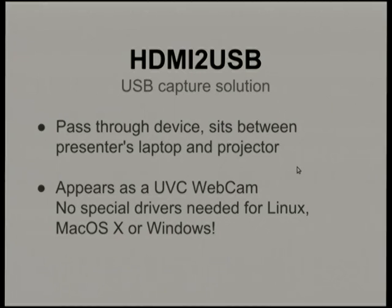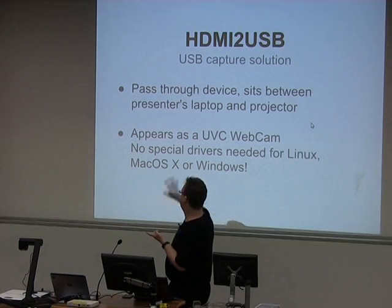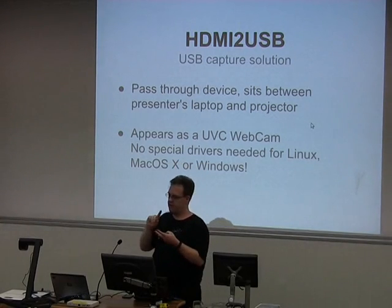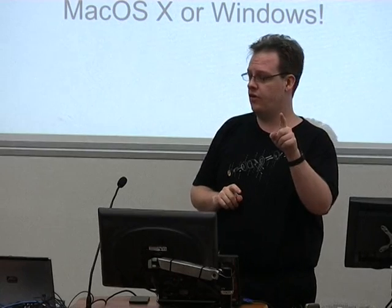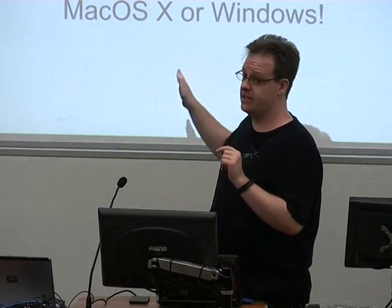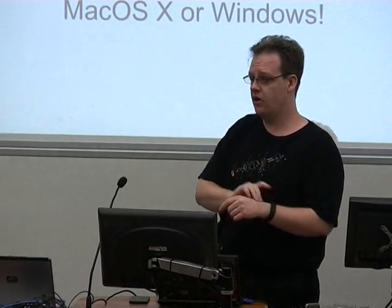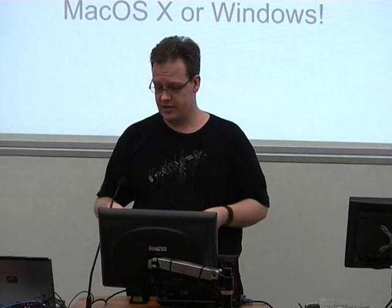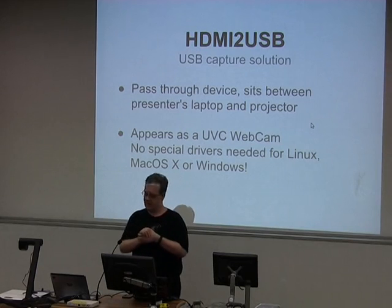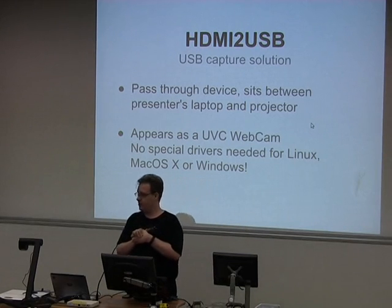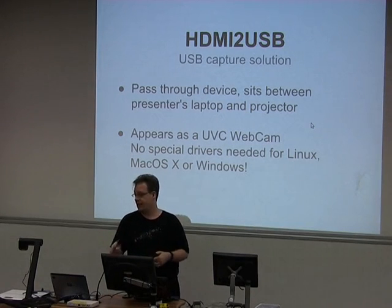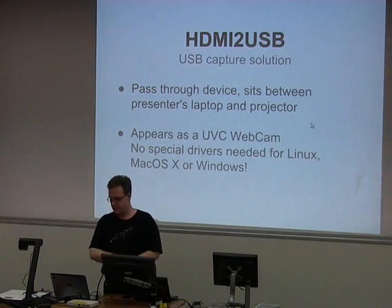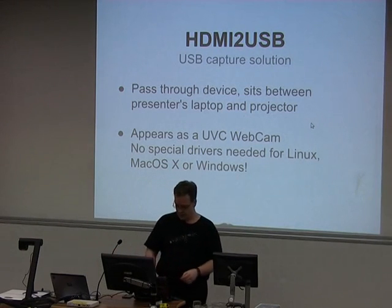Pointing a camera at a projector screen is a horrible idea for many reasons. Cameras aren't designed to be pointed at something like a projector screen — there are frequency issues where the camera's capture rate might differ from the projector's refresh rate, so if there's any movement you'll get lines running through the video. The best solution used to be a Datapath VisionRGB Twin Pack, a VGA capture device, but they don't make them anymore and the world is moving on from VGA. You also can't use it to capture HDMI due to the closed proprietary system.